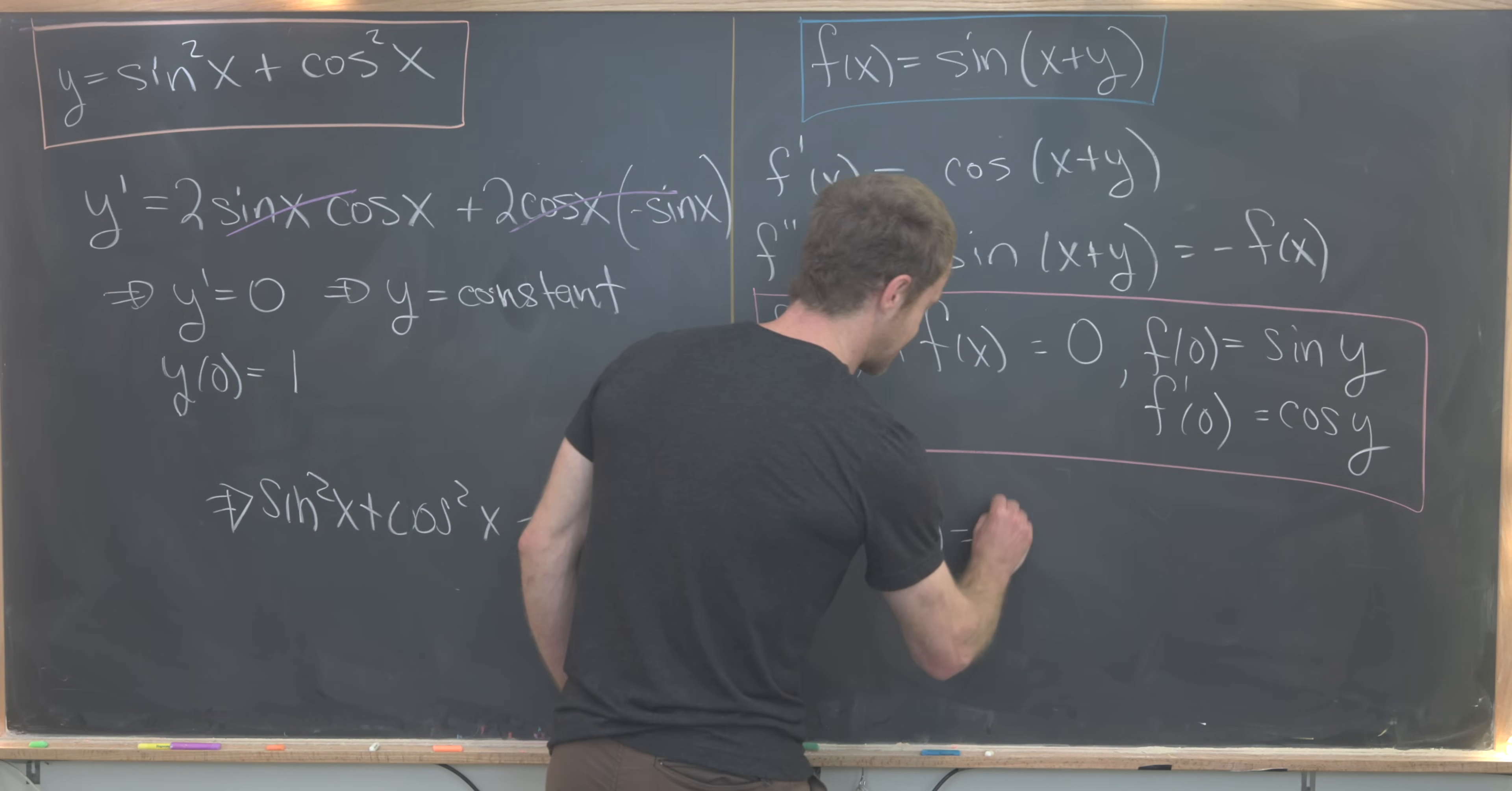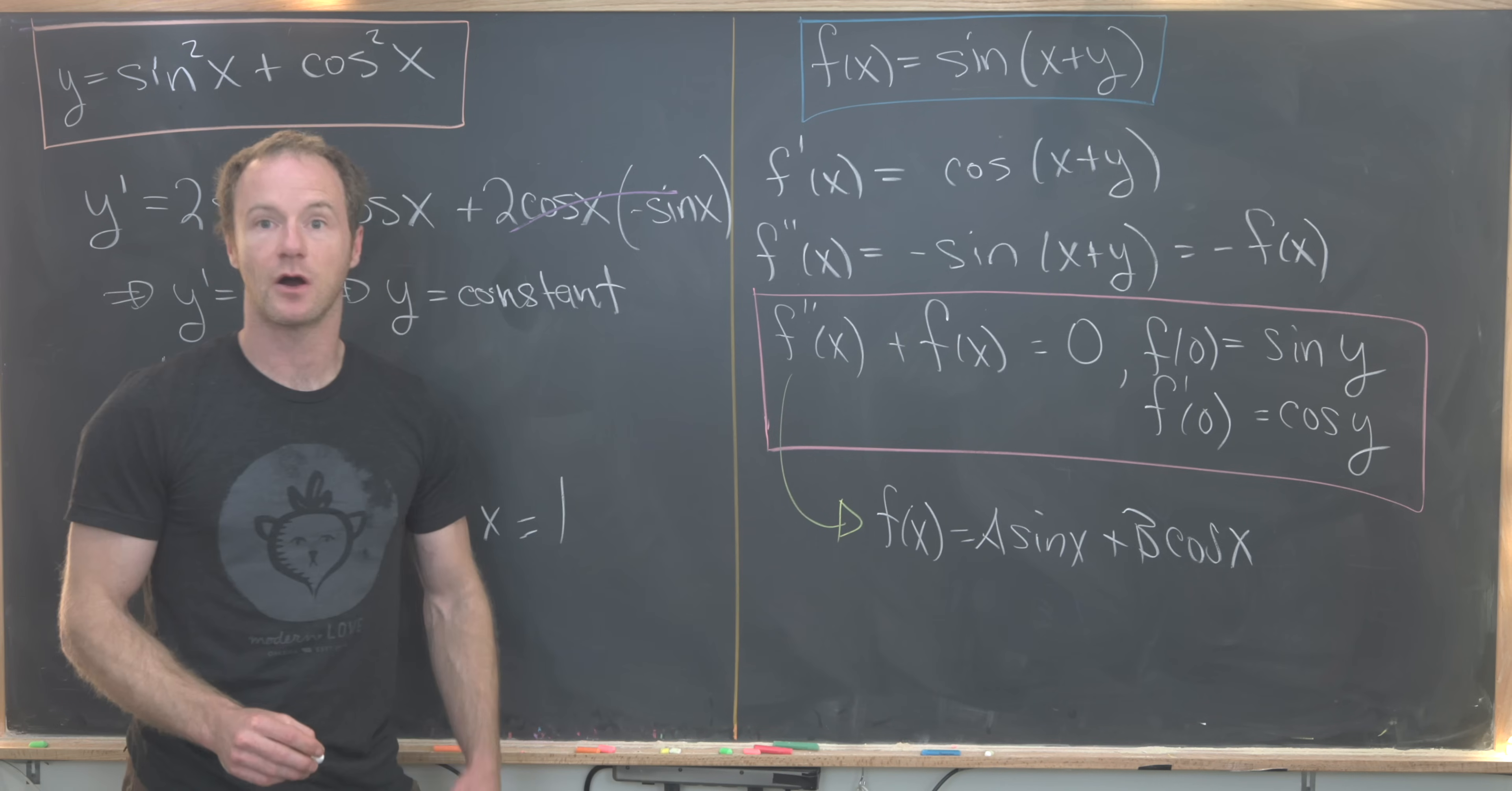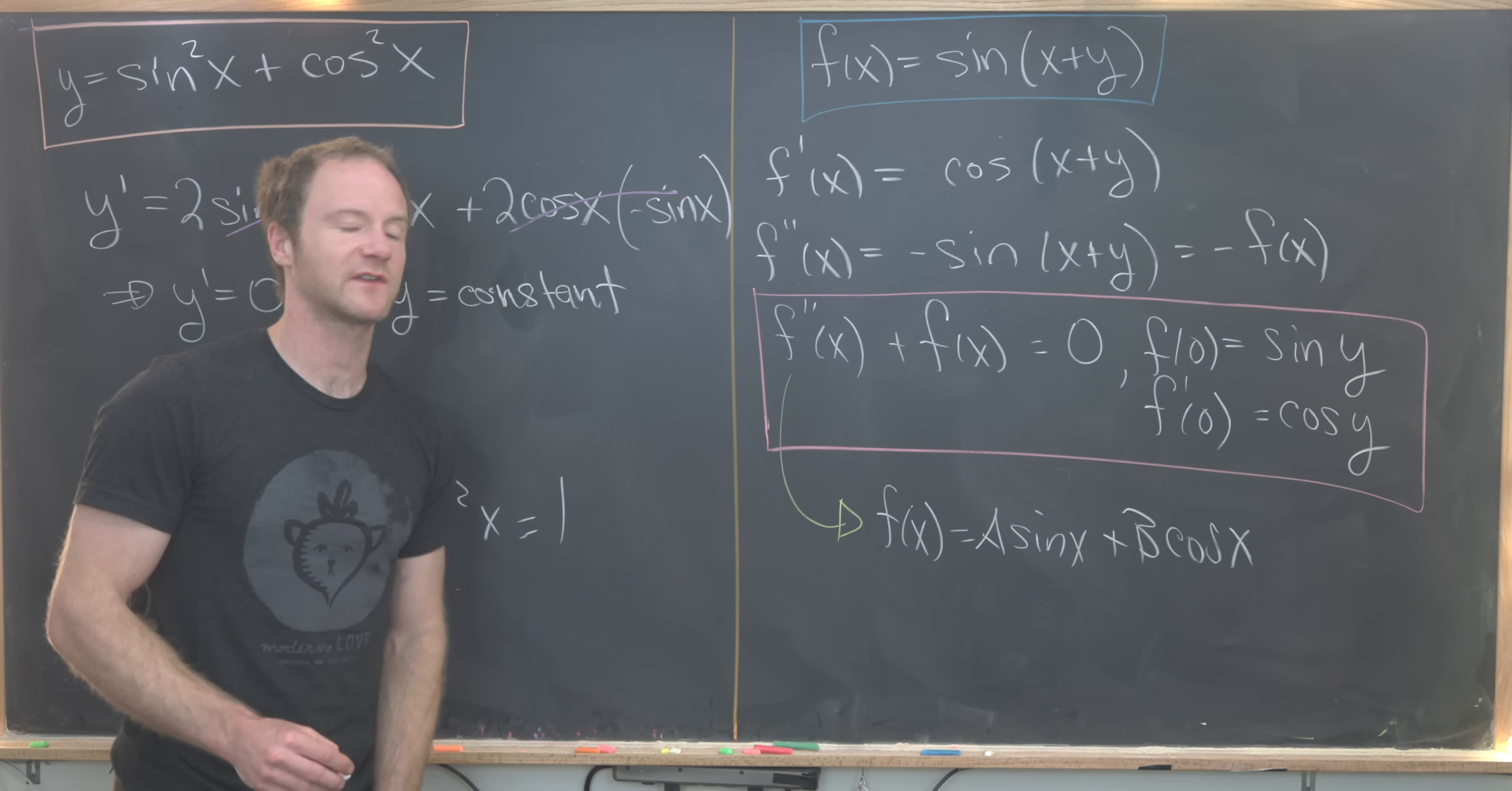Here we have f(x) = A sin(x) + B cos(x), where A and B are constants. Let's notice if we take the second derivative of this, it most definitely satisfies this differential equation.